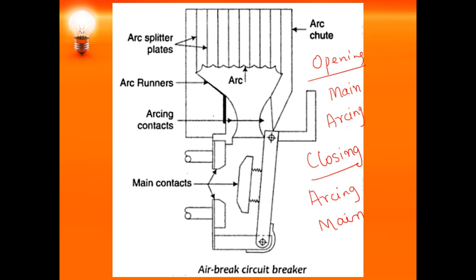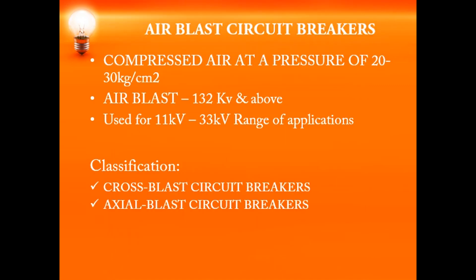Next we will see air blast circuit breakers. In air blast circuit breakers, compressed air is used instead of atmospheric pressure air. We use compressed air at a pressure of 20 to 30 kg per centimeter square. These air blast circuit breakers are suitable for operating voltages of 132 kV and above, and can also be used for 11 kV to 33 kV range applications. Air blast circuit breakers are mainly of two types: cross blast and axial blast circuit breakers.